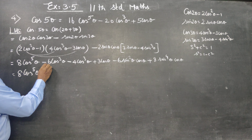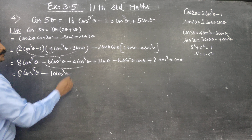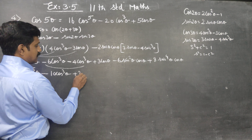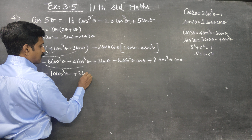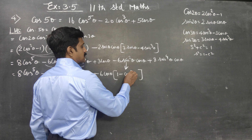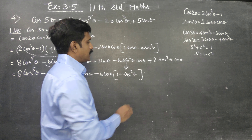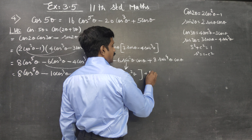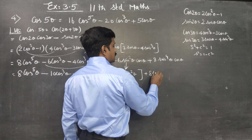Collecting terms: 8cos⁵θ - 6cos³θ - 6sin²θcosθ + 8sin⁴θcosθ. Now we substitute sin²θ = 1 - cos²θ. So -6sin²θcosθ becomes -6(1 - cos²θ)cosθ = -6cosθ + 6cos³θ.